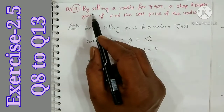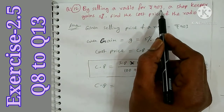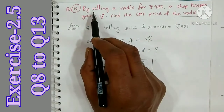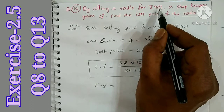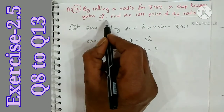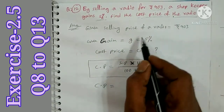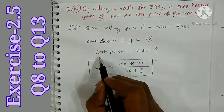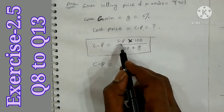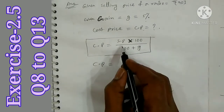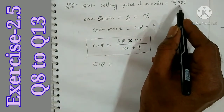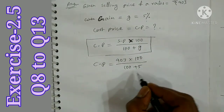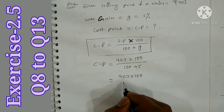Question 12: By selling a radio for Rs. 903, a shopkeeper gains 5%. Find the cost price of the radio. The selling price is Rs. 903 and gain is 5%. Cost price equals selling price into 100 divided by (100 plus gain percentage), so 903 into 100 by 105.